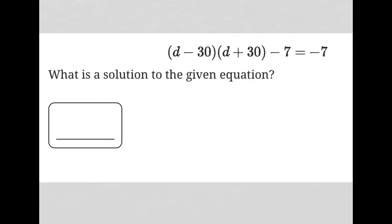This question starts off by providing us with this equation here. We have the product of two binomials, d minus 30 times d plus 30, and then minus 7 is equal to negative 7. Then the question goes on to say, what is a solution to the given equation?